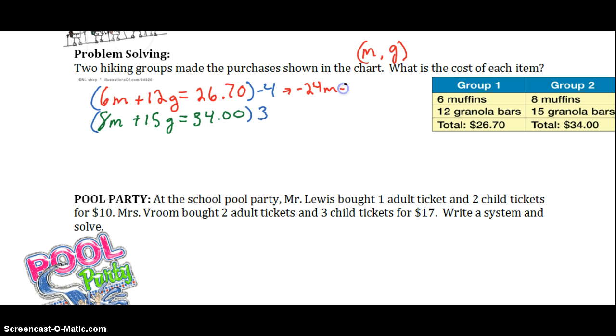So, we'll end up getting, I'm just going to carry it over here. Negative 24m minus 48g equals negative 106.8. For the equation below, we'll have 24m plus 45g equals 102. Then we can add these, and our m's are going to cancel. We'll be left with negative 3g equals negative 4.8. Divide each side by negative 3. And we're left with g equals 1.6. So, we know the price of the granola bars, which is 1.6.